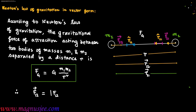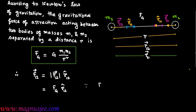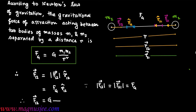Therefore, vector F12 equals |F12| · r12 cap. Since vector F12 is parallel to unit distance vector r12 cap, vector F12 = Fg · r12 cap. The magnitude of vector F12 equals the magnitude of vector F21, which equals Fg. Therefore, vector F12 = G·m1·m2 / r² · r12 cap.